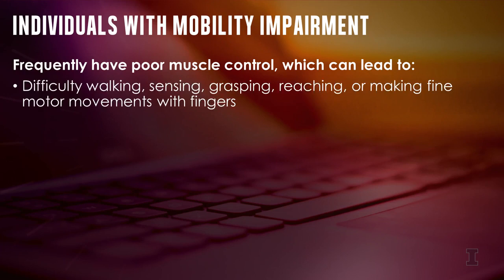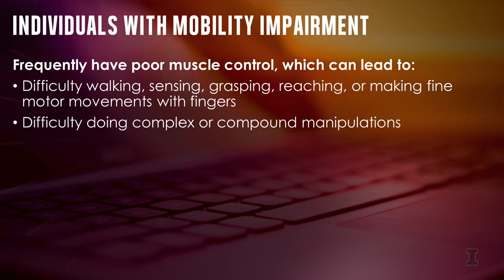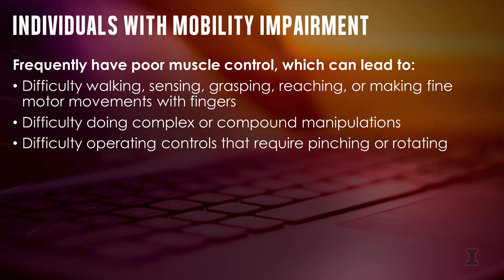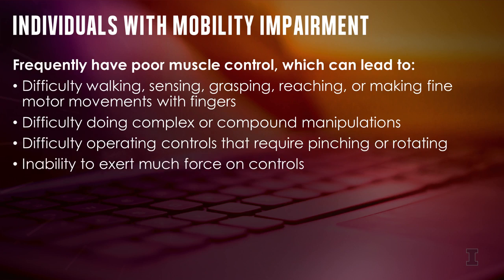People with mobility impairment frequently have poor muscle control, which can lead to difficulty walking, sensing, grasping, reaching, making fine motor movements with fingers, difficulty doing complex or compound manipulation — such as pushing while turning a doorknob or pressing several buttons simultaneously — difficulty operating controls that require pinching or rotating, and an inability to exert much force on controls.